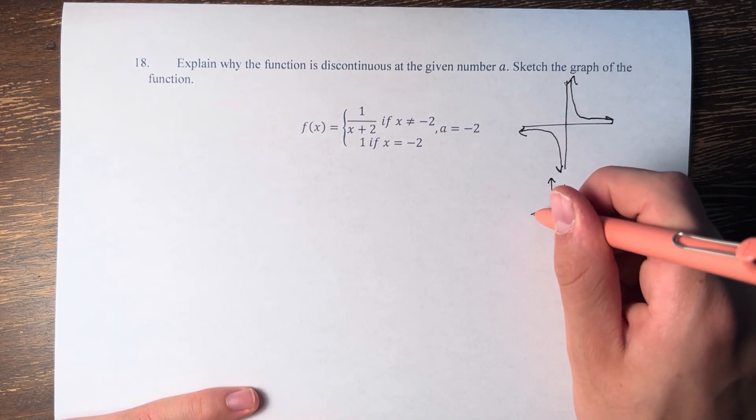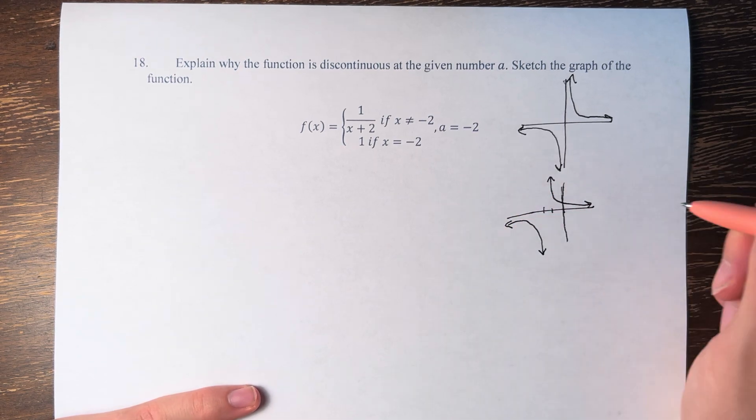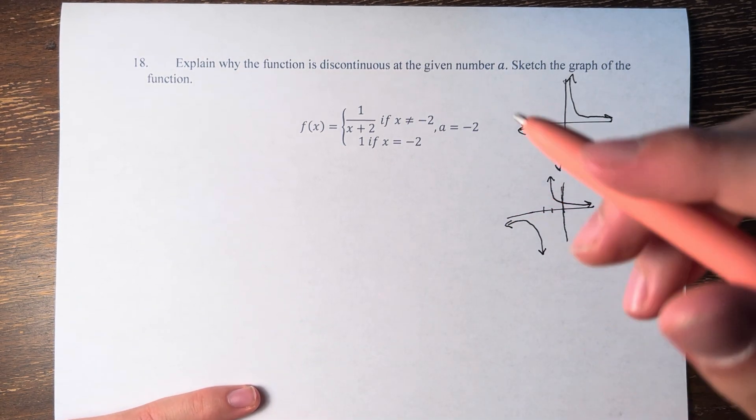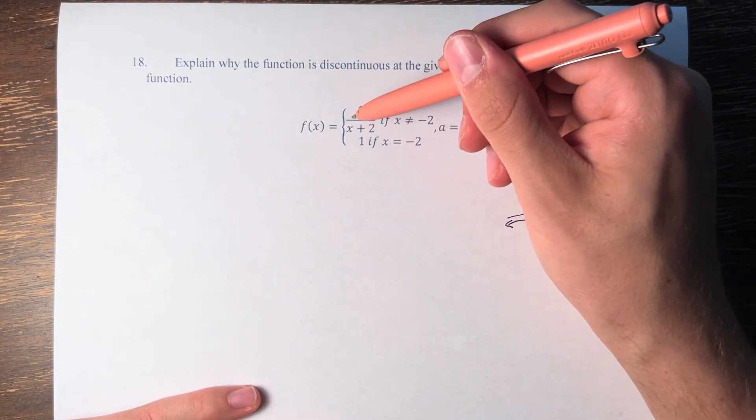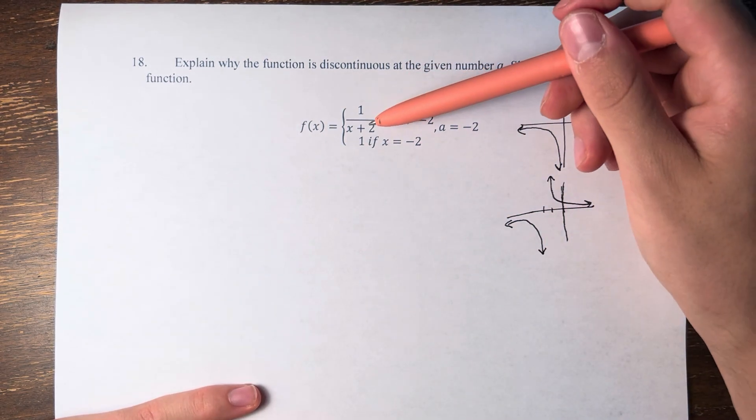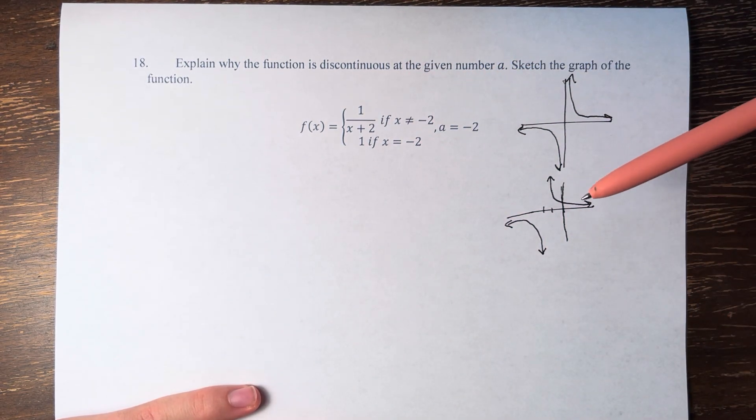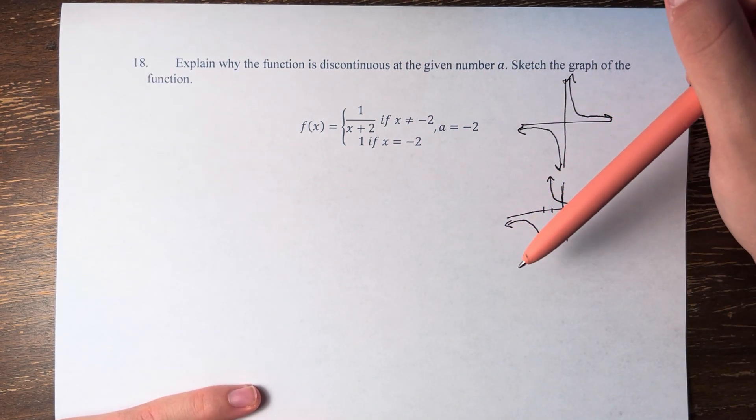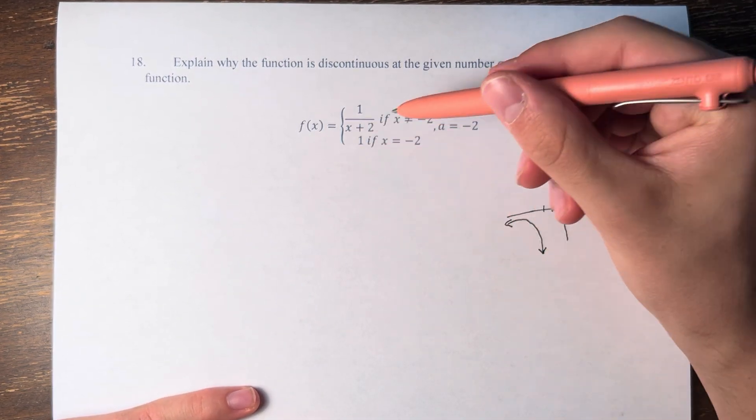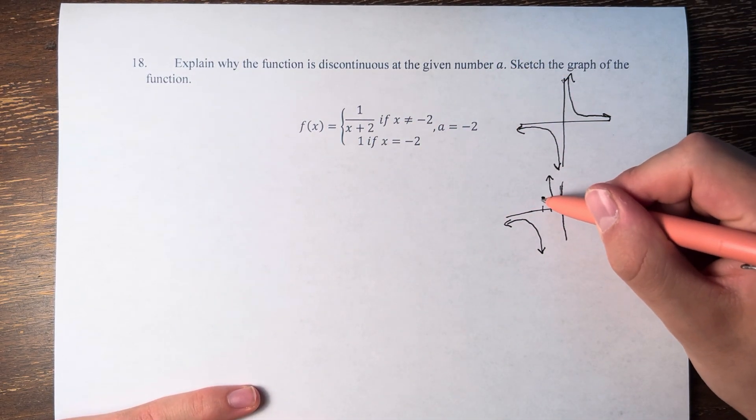The function largely looks the same, it's just shifted a little bit to the left. And this is the graph of 1 over x plus 2. If x is not equal to negative 2, that's perfect because this function doesn't even equal negative 2, so there's nothing to erase. And then at x equals negative 2, the function is equal to 1.